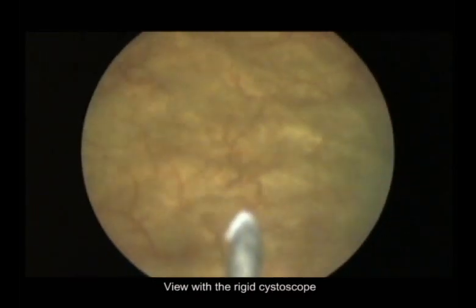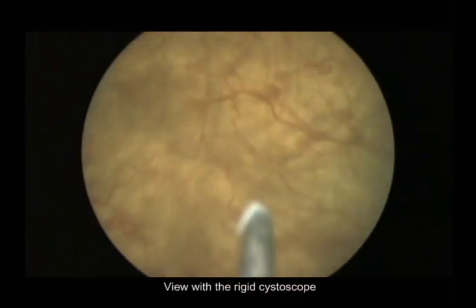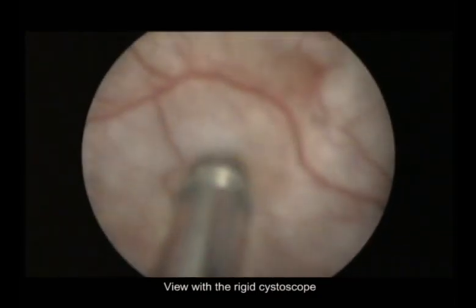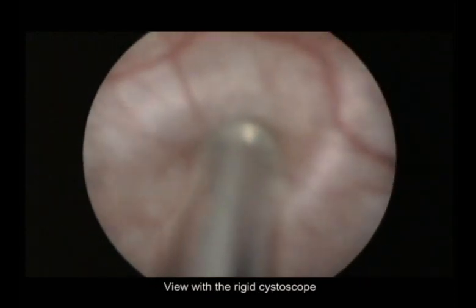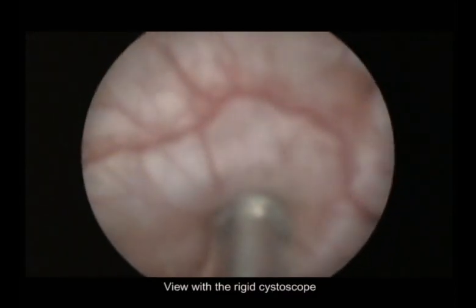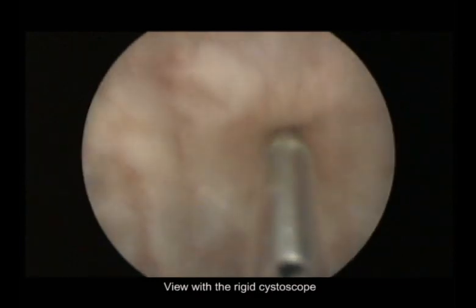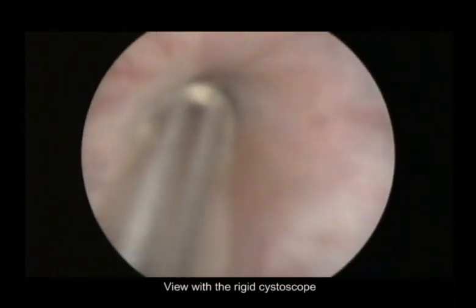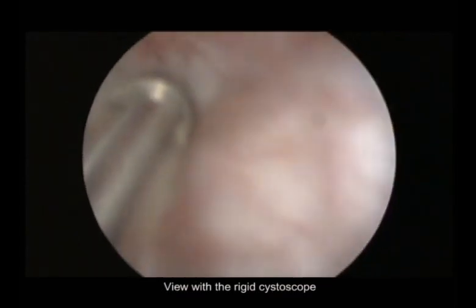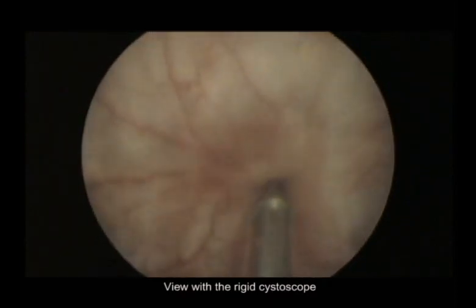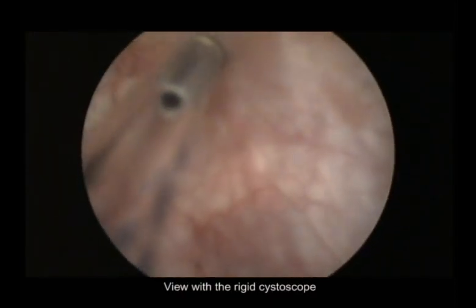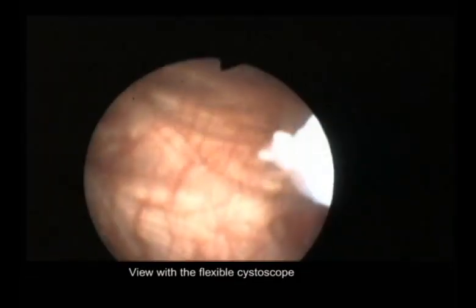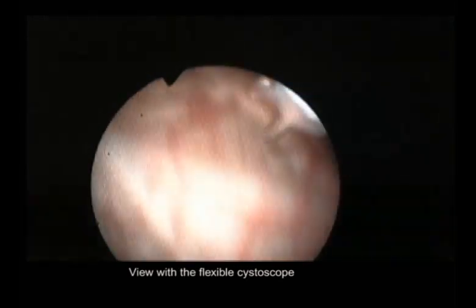We select an injection site without blood vessels and we push the needle into the bladder wall. As the tip of the Bonee needle is only 4 mm we can push it in to the needle neck. We inject 1 ml of the solution. In some cases we may be able to see a bulb here at the injection site.